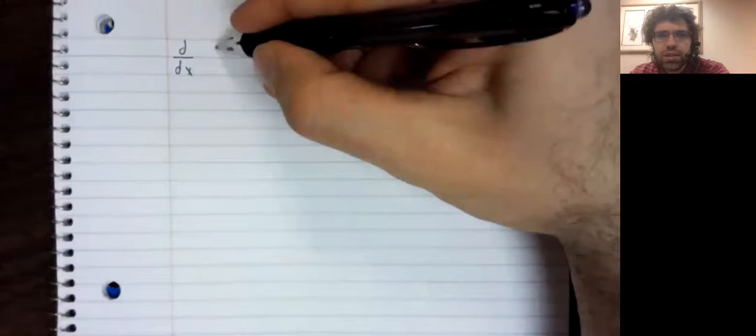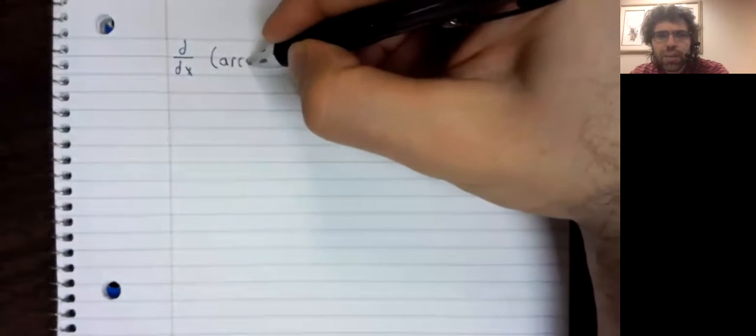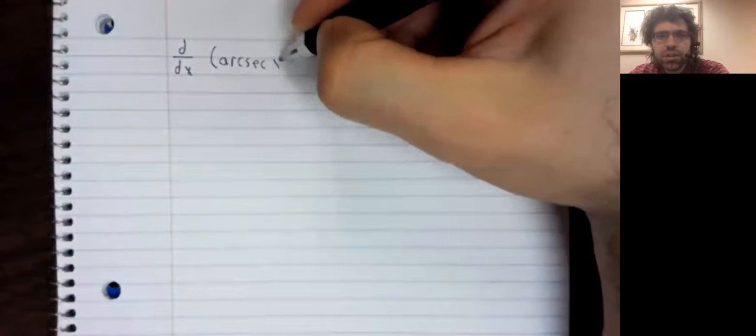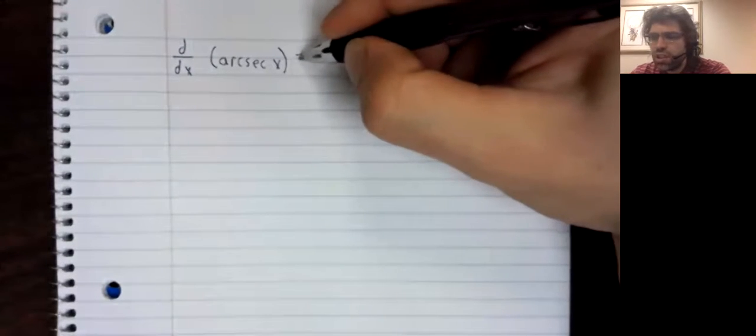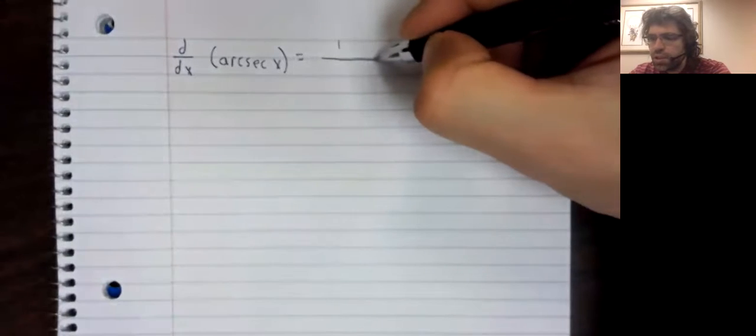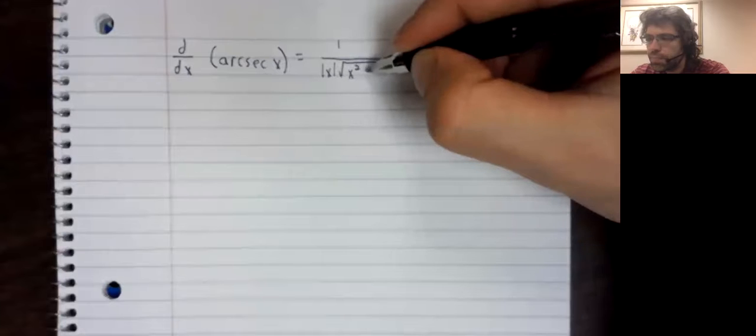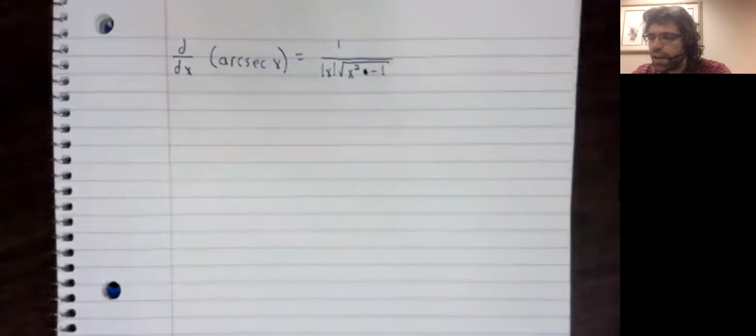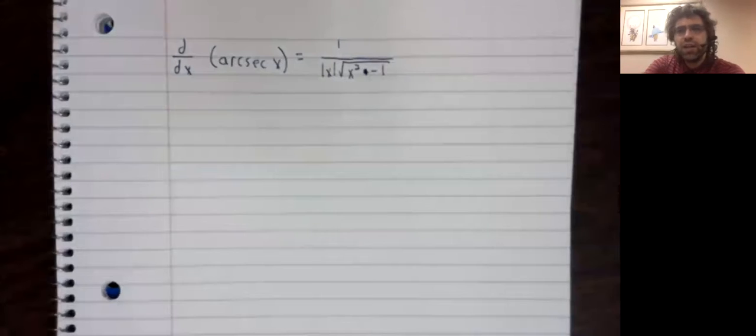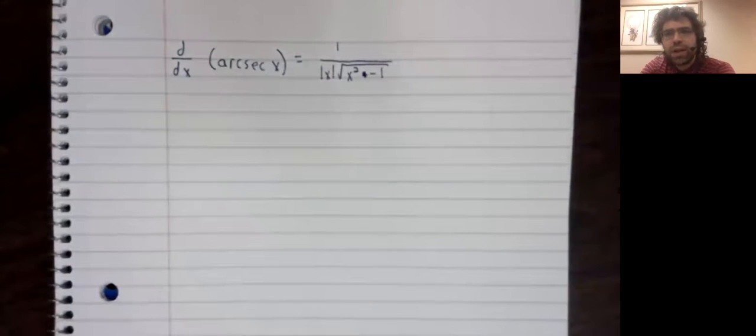The arc secant does have one thing about it that requires a little comment. The derivative of the arc secant involves an absolute value: one over the absolute value of x times the square root of x squared minus one. And this isn't really what I think requires comment.